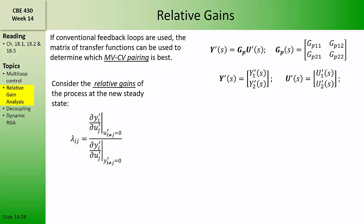There are four relative gains that each have the symbol lambda ij. The i refers to the controlled variable and the j refers to the manipulated variable. Each relative gain is a ratio of what we call an open loop gain to what we call a closed loop gain. The open loop gain is the relative change in the controlled variable with respect to a manipulated variable when all of the other manipulated variables are held constant — that is, their perturbations are zero.